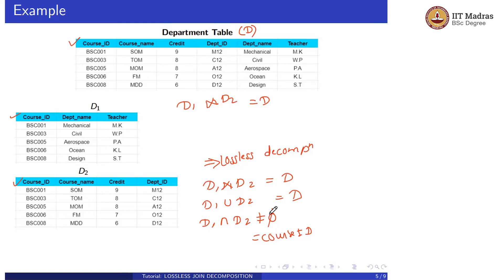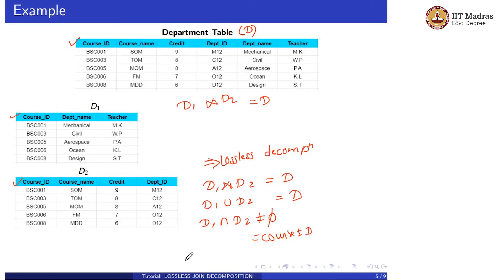For a lossless decomposition: D1 natural join D2 must equal D (meaning D1 union D2 equals D), and D1 intersection D2 should not be equal to the empty set. We will now see the conditions from which we can determine whether our decomposition is lossless or lossy.